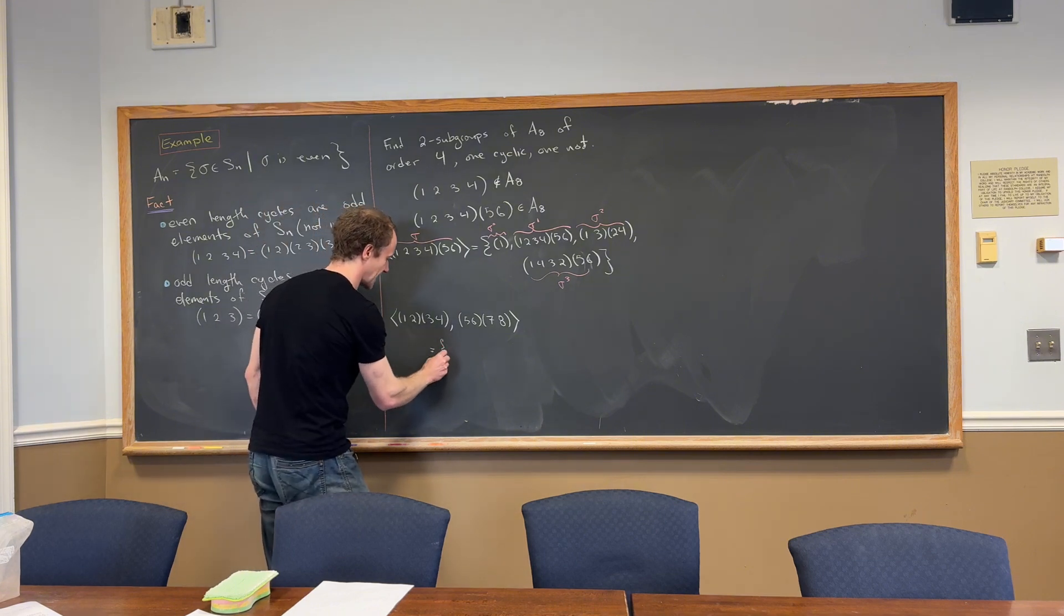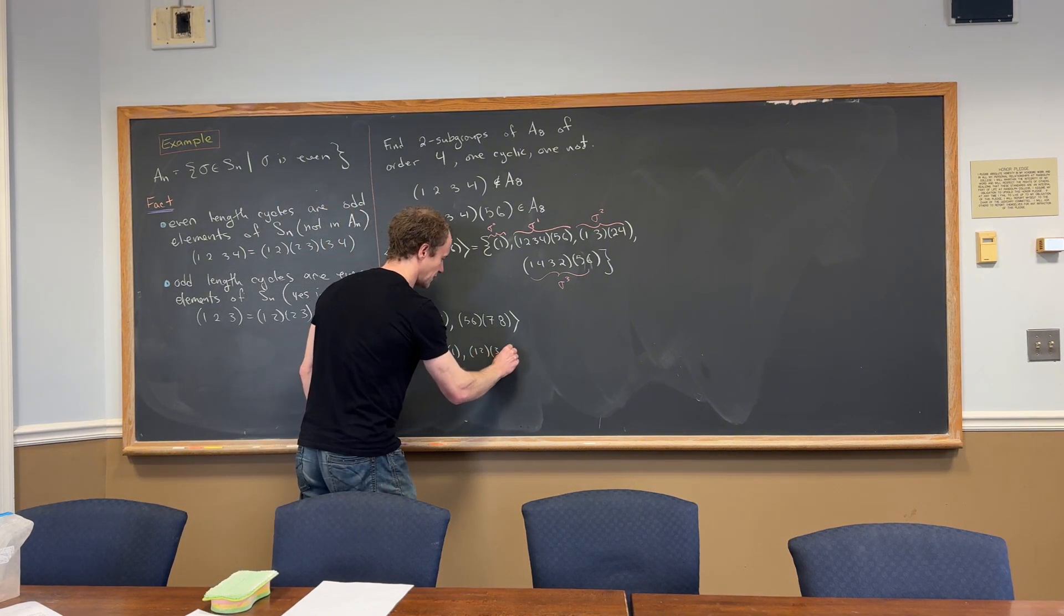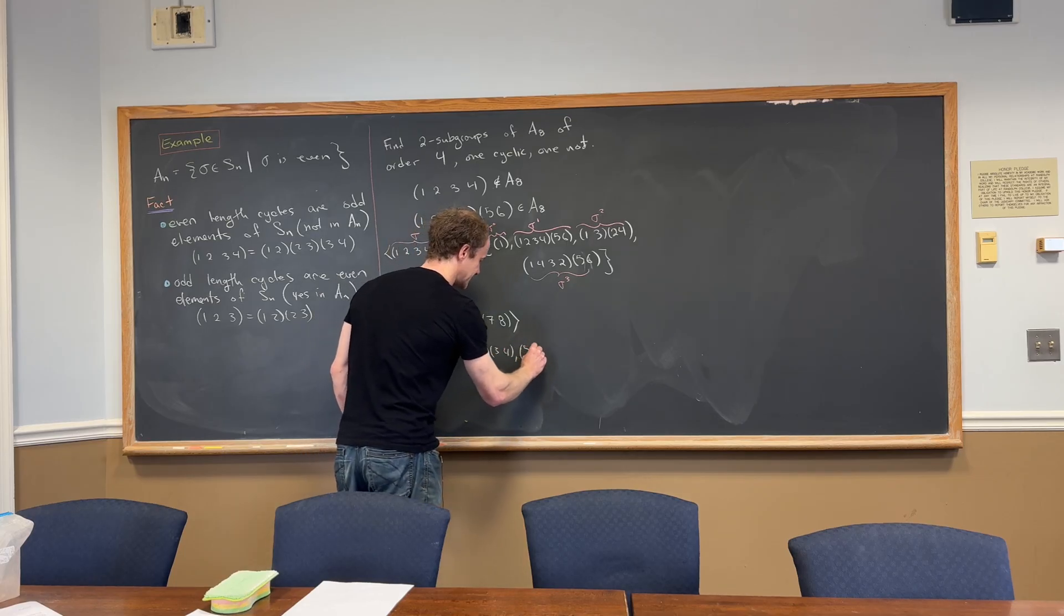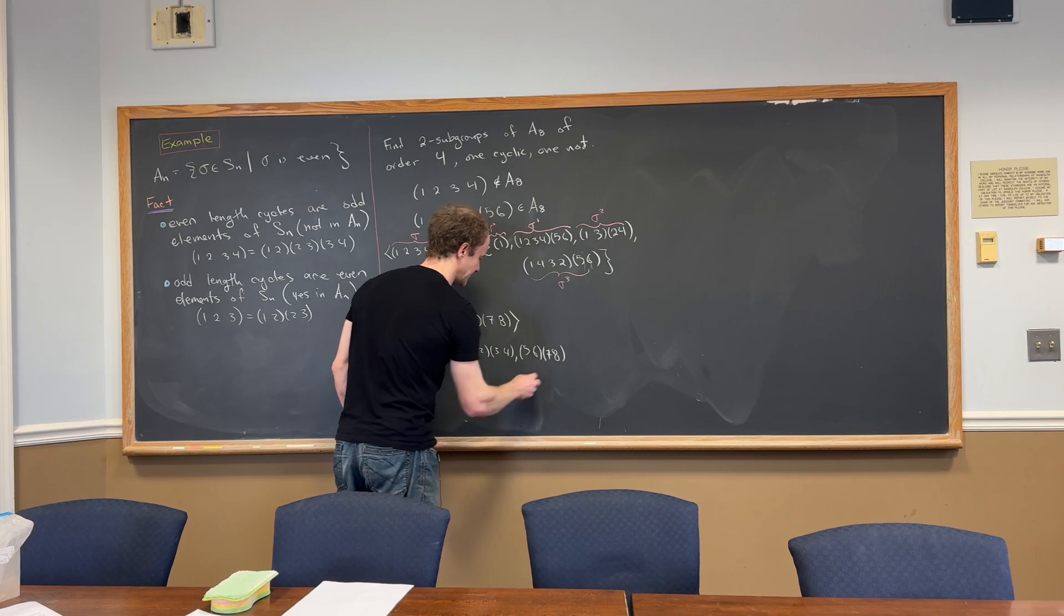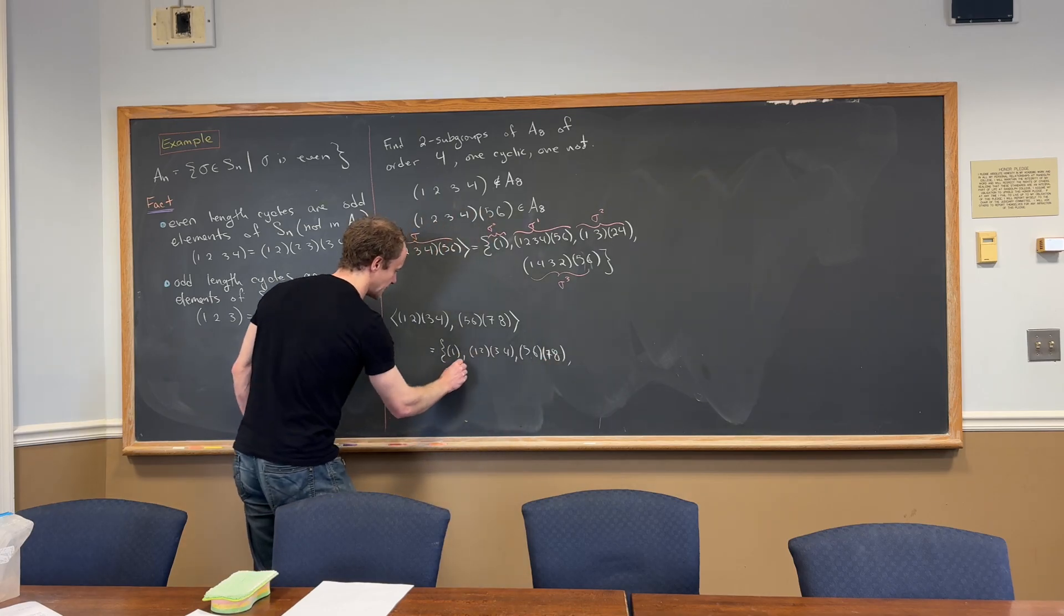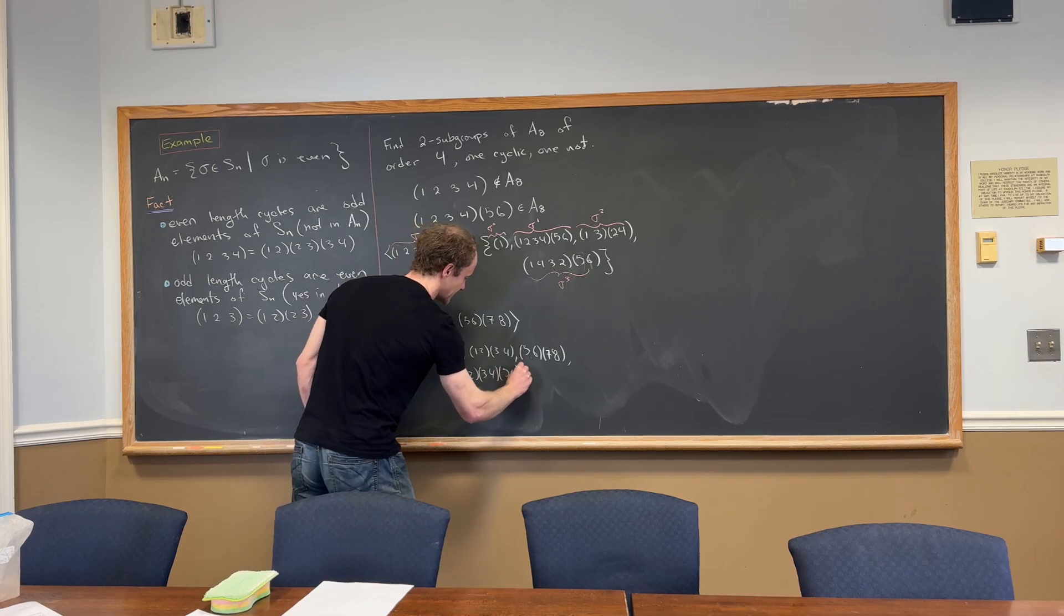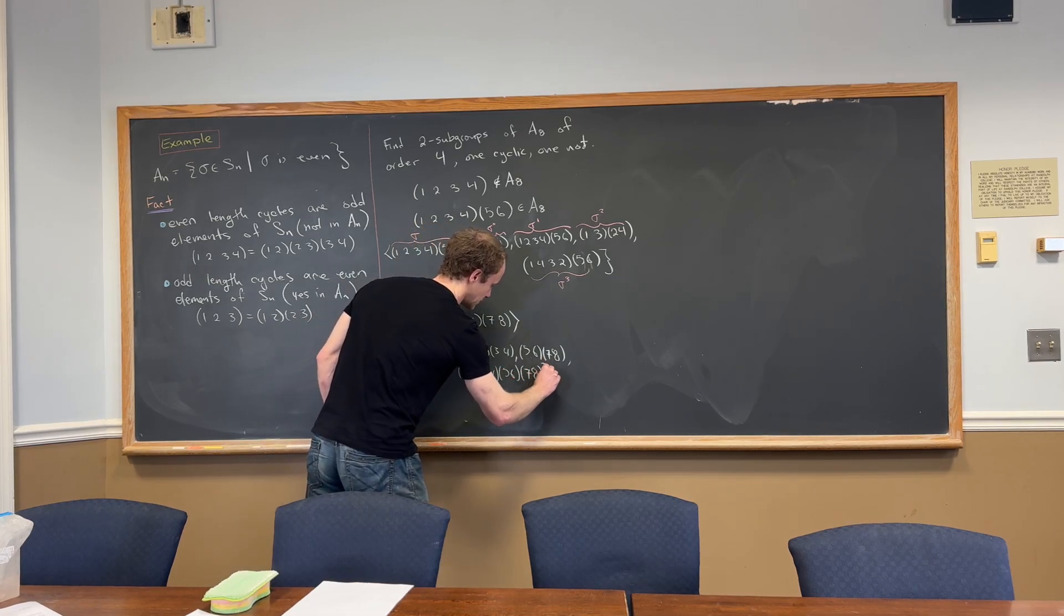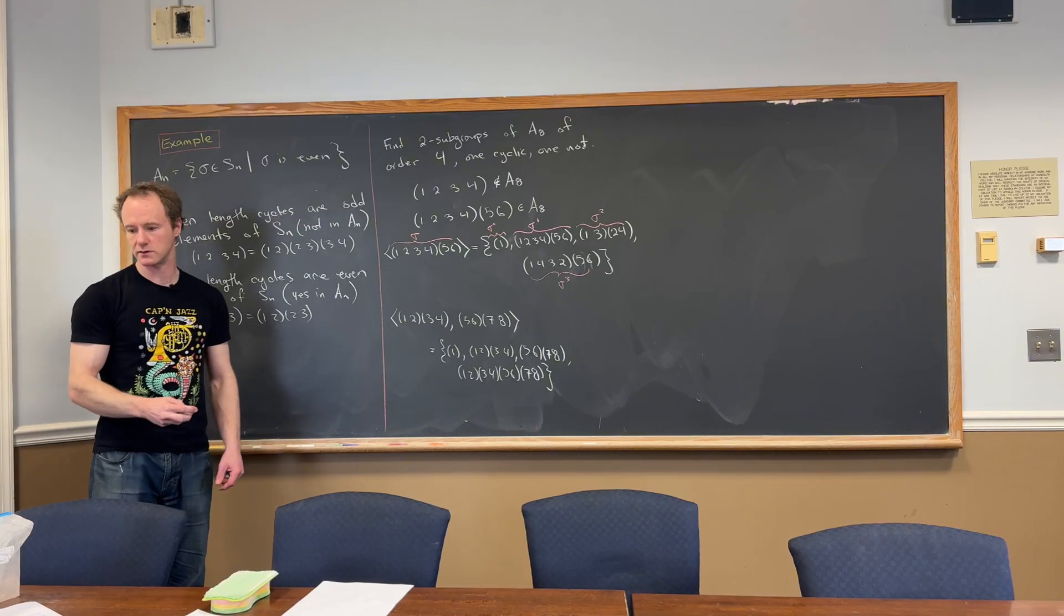So we could rewrite this as, well, we've got the identity. We've got (1,2,3,4). We've got (5,6,7,8). And then finally, we've got the product of those. But the product of those, since those are disjoint, you just kind of write them after each other. There's really nothing to do there.